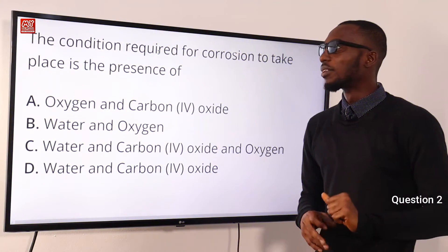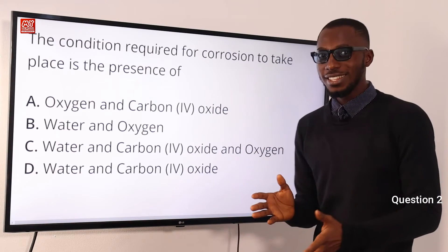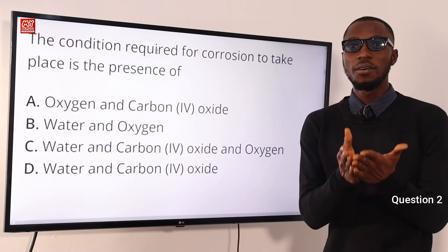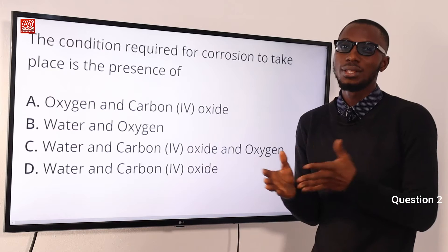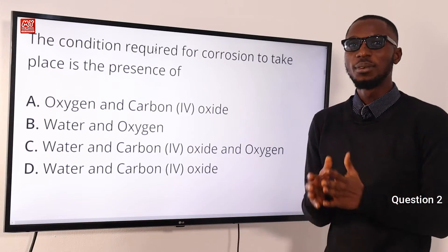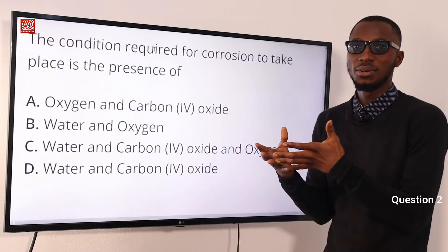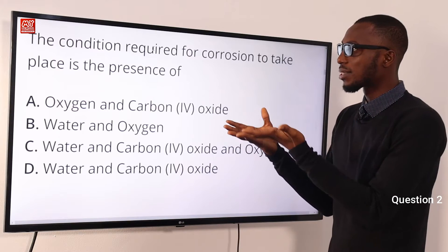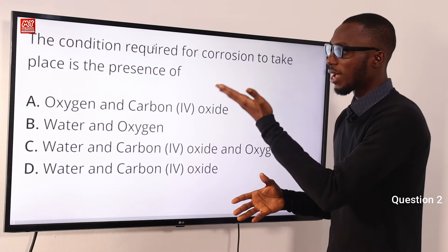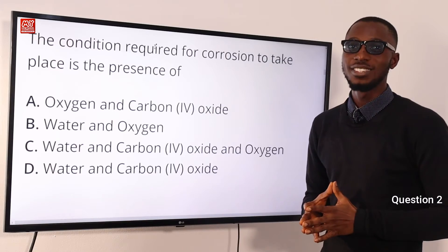Question 2. The condition required for corrosion to take place is the presence of atmospheric oxygen and water. What we need carbon dioxide and other gaseous pollutants like SO2 for is just to make the process faster. But the main constituents that we need to make this happen is the action of atmospheric oxygen and water. Option B is the correct option.